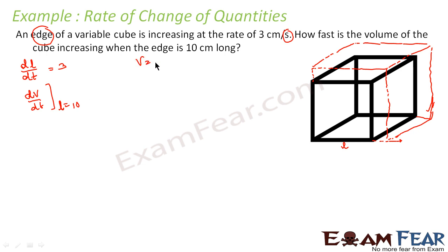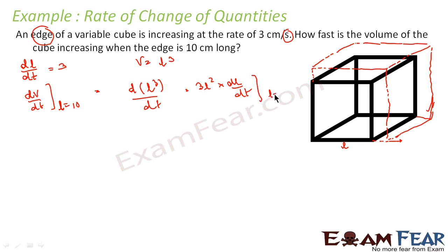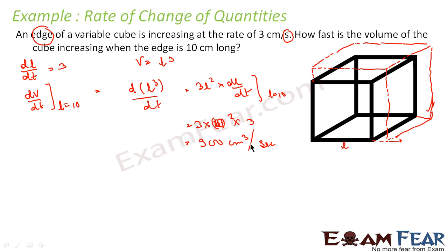We know the formula: V equals l cubed. So dV/dt equals d(l cubed)/dt, which is 3l squared times dl/dt. With l equal to 10: 3 times 10 squared times 3 equals 900. The unit is change in volume over time, which is centimeters cubed per second. So the answer is 900 centimeters cubed per second.